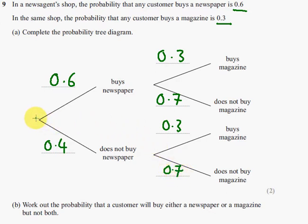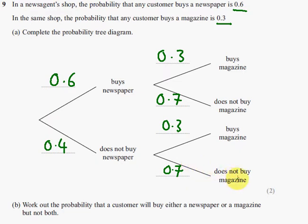Now, this is the probability that he buys a newspaper and a magazine. He could buy a newspaper and not buy a magazine. He could also not buy a newspaper but buy a magazine. Or, not buy a newspaper and not buy a magazine. So, we've filled in that probability tree.